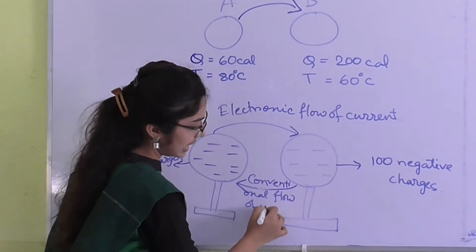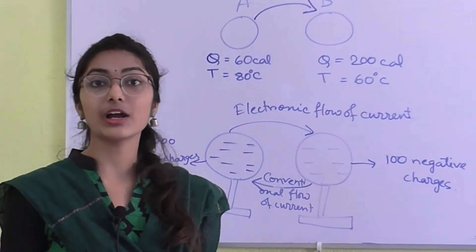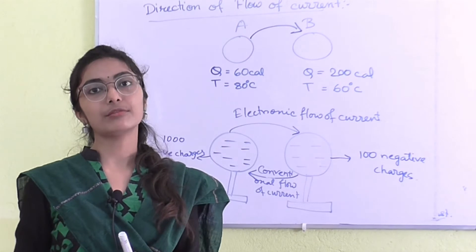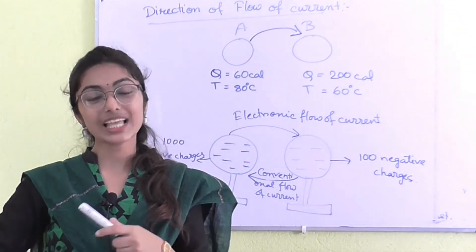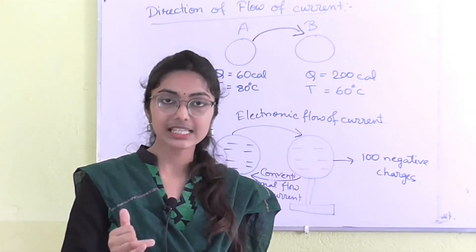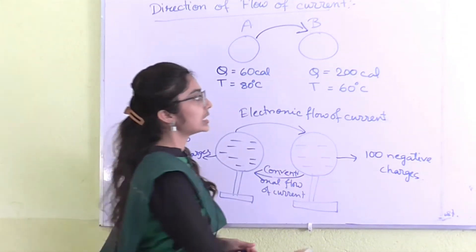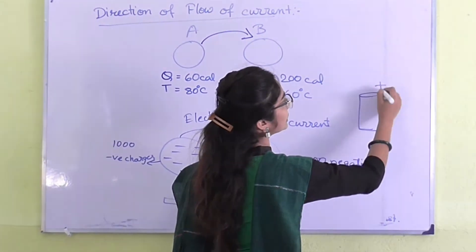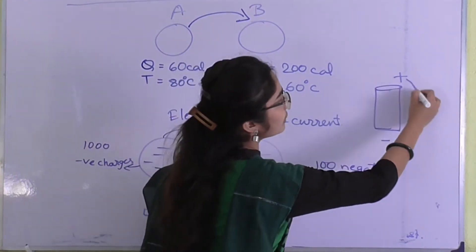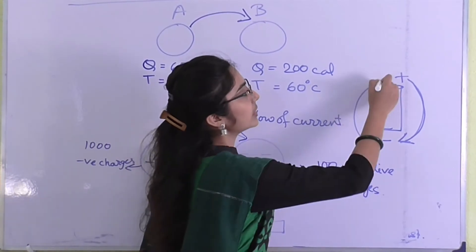In a source of electricity such as a battery, there are two terminals: positive and negative. You should always remember that conventionally current flows from positive to negative, though the actual electronic flow of current is from negative to positive. The conventional flow of current passes from positive to negative, but the actual or electronic flow of current is from negative to positive.